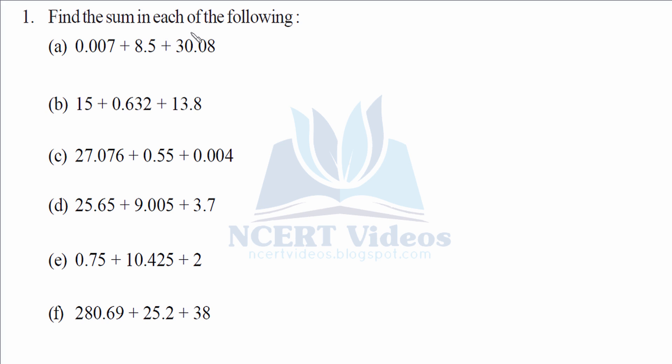Find the sum in each of the following. Here we have questions where we have to add them all. First we'll write 0.007 because it makes least chances for error. Third is 30.08. Fill other places with zero to ease the calculation. Now let's add them: 7, 8, 5, 8, 3. That gives you 38.587.